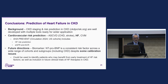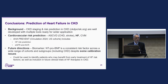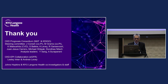In conclusion: the background is CKD staging and risk prediction — we have many equations available at nckdpcrisk.org and other websites. Cardiovascular risk prediction has advanced with PREVENT and we need to integrate it. For future directions, NT-proBNP seems quite useful as suggested for a number of years. There are clearly some calibration differences, and those exist even more for troponin given different assays. These biomarkers could be used to identify patients who may benefit from early treatment of heart failure risk factors. Thank you to KDIGO, NKF, the steering committee, and CKD Prognosis Consortium members and CKD-EPI collaborators.